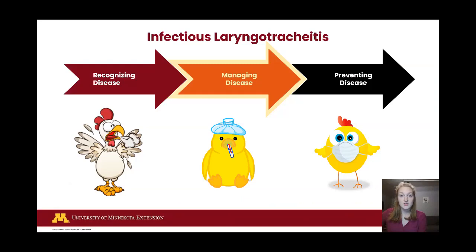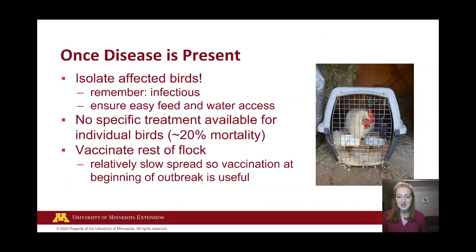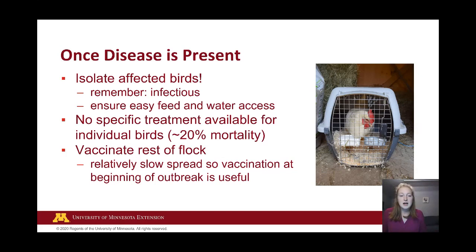Next, we will discuss management of ILT. The first thing you should do if you suspect a bird has ILT is to isolate her — make sure she has easy food and water access but keep her away from the rest of the flock. Care for her last so you don't carry the disease to the rest of the flock. Once the bird is infected, there is no specific treatment for ILT since it is a virus and antibiotics are not effective. Many birds live through an ILT infection, but remember it's a herpes virus — herpes is forever. The infection becomes latent and hides, but the bird will have it for the rest of her life.